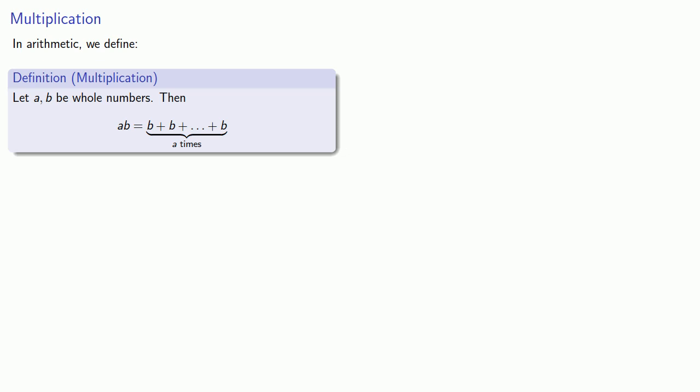In arithmetic, we define multiplication first by the whole numbers. Let a and b be whole numbers. Then the product a times b is the sum of a whole bunch of b's, specifically a b's. So when I write 5 times 3, I'm going to add together 5 threes. And that gives me the product. So 5 times 3 is 15.